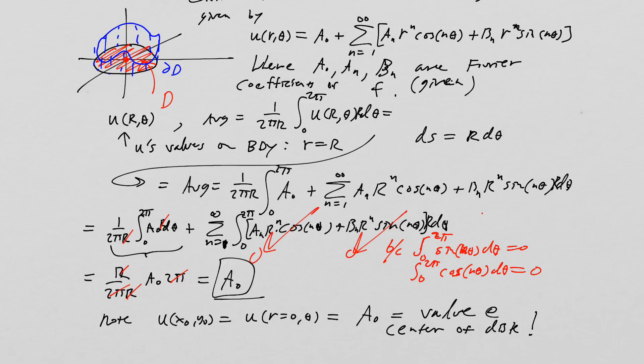We've just proved that yes, we've actually just proved the mean value property. There we just did it. It doesn't matter what a₀ is. We just know that it's equal to the average and it's also equal to the value of the function at the center.